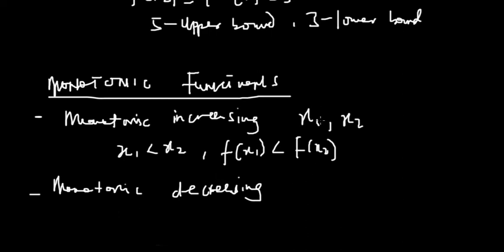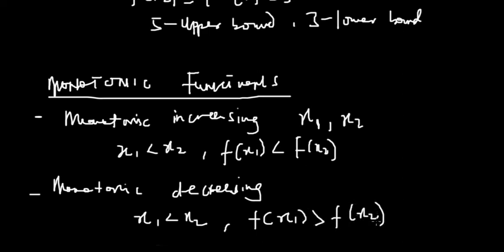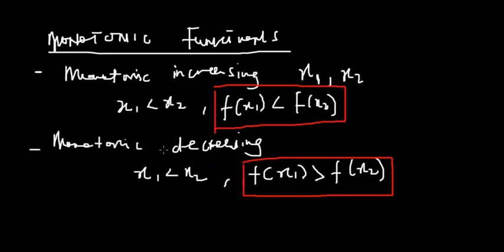For monotonic decreasing, it's just the vice versa. You are given x1 and x2, and x1 may still be less than x2 — but ignore that portion and focus on the function values. For monotonic decreasing, f(x1) is always greater than f(x2). Keep this in mind: it's always x1 that comes out on top.